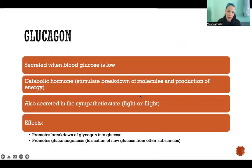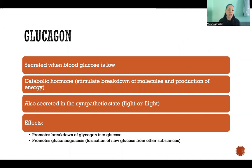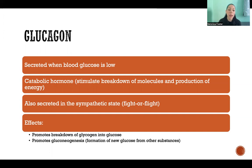Glucagon is secreted when blood glucose is low. It is a catabolic hormone, which means it stimulates the breakdown of things in the body to produce energy. In this case, it's to make more blood glucose available because blood glucose has gotten too low.